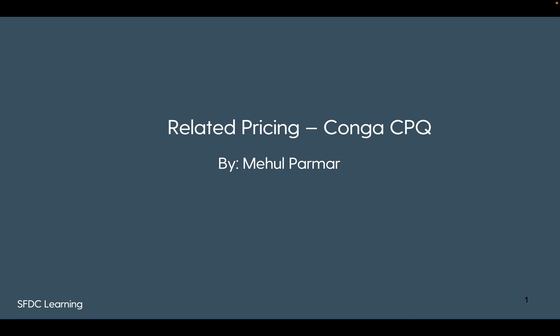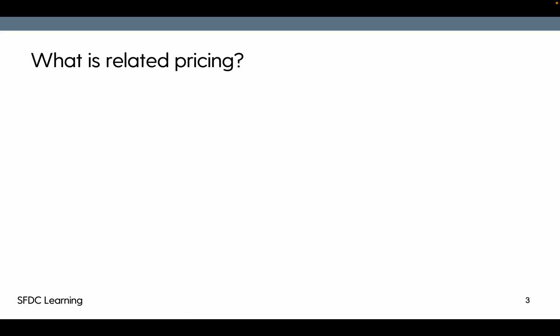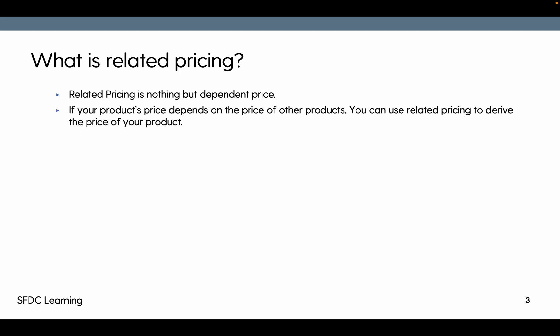Here is the agenda for today: first, what is related pricing; then how to set it up; then a use case as we cover each time; and then we'll review the configuration. So, related pricing is nothing but dependent pricing — if your product's price depends on the price of other products, you can use related pricing to derive the price.